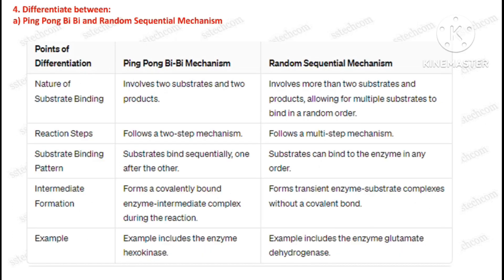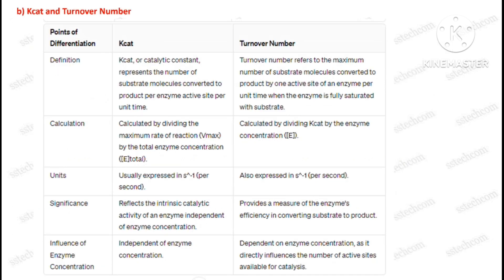Question number four: differentiate between ping-pong bibi and random sequential mechanism. Second: difference between kcat and turnover number.